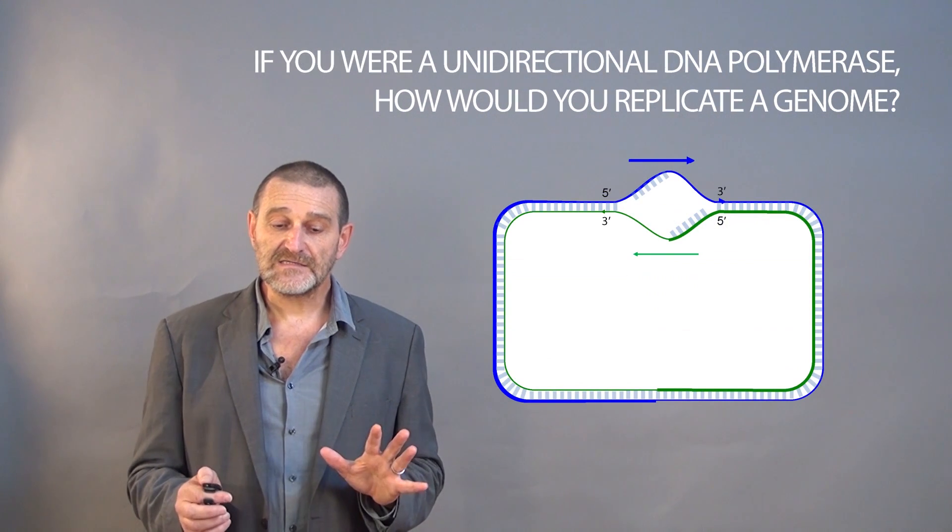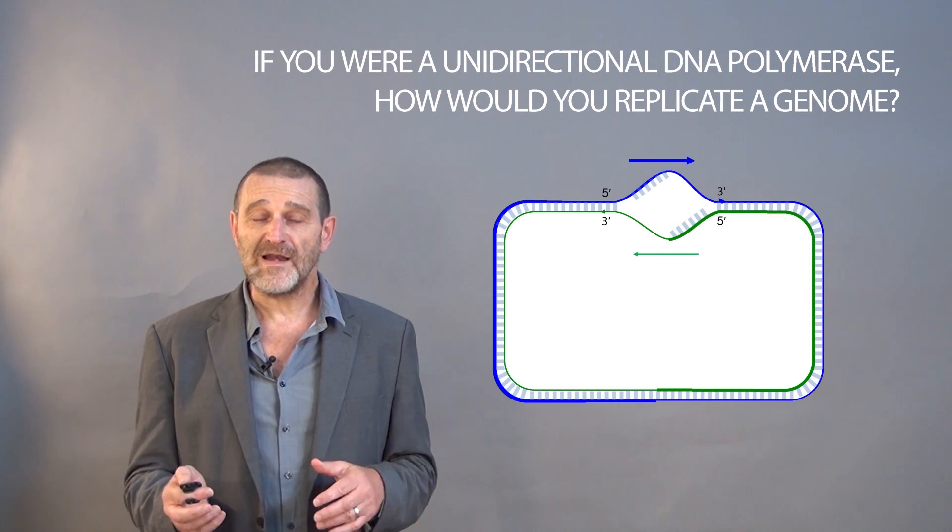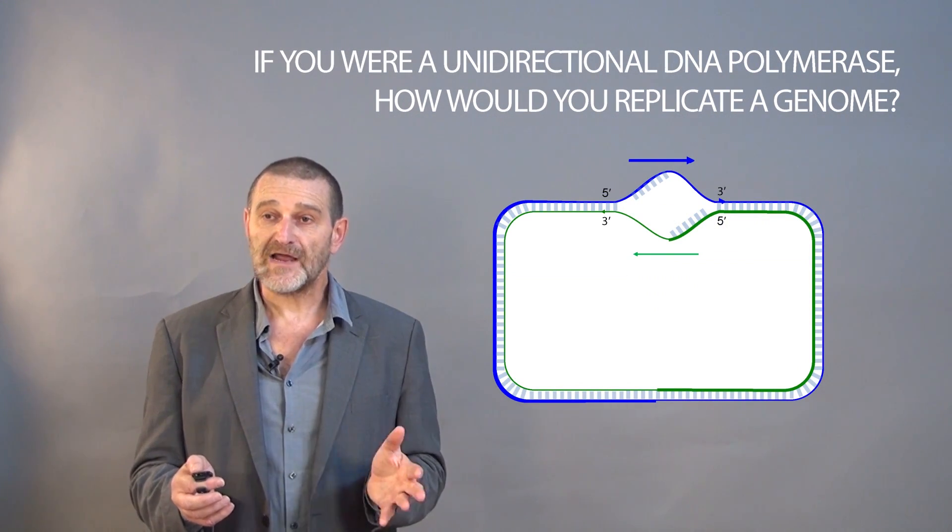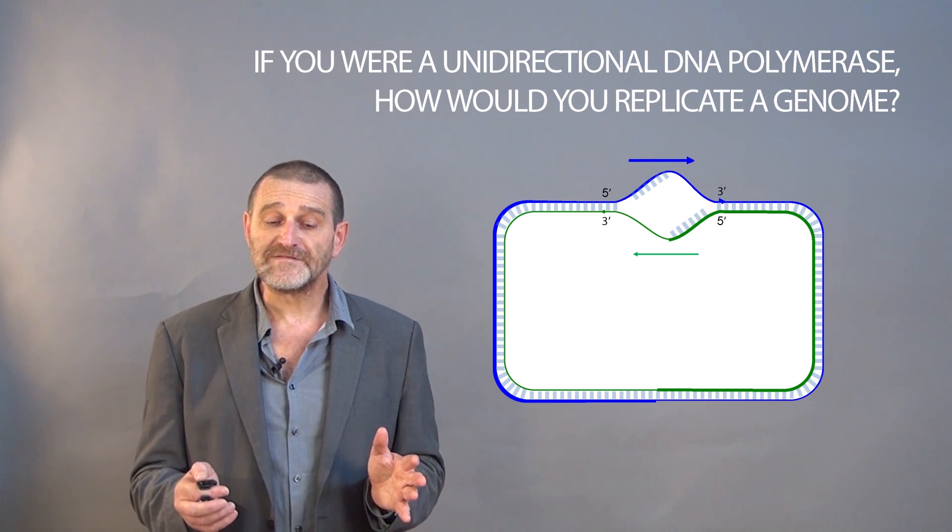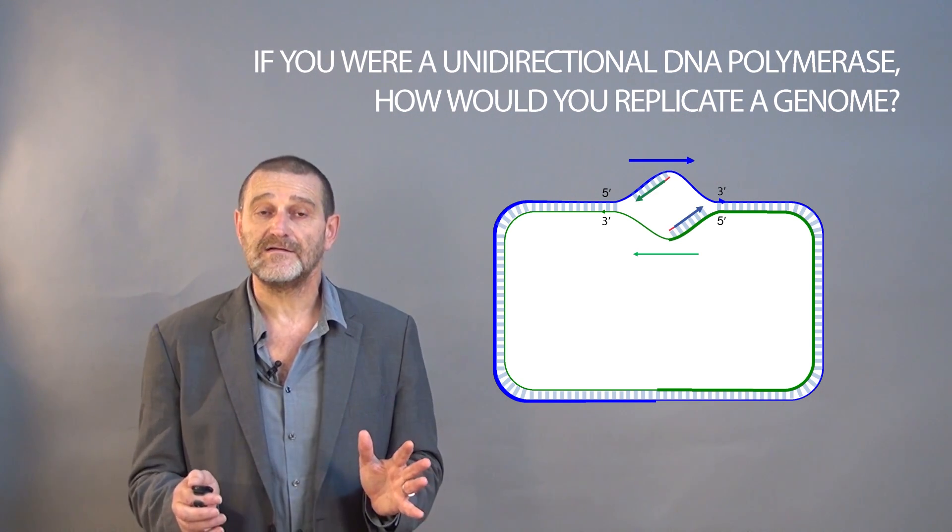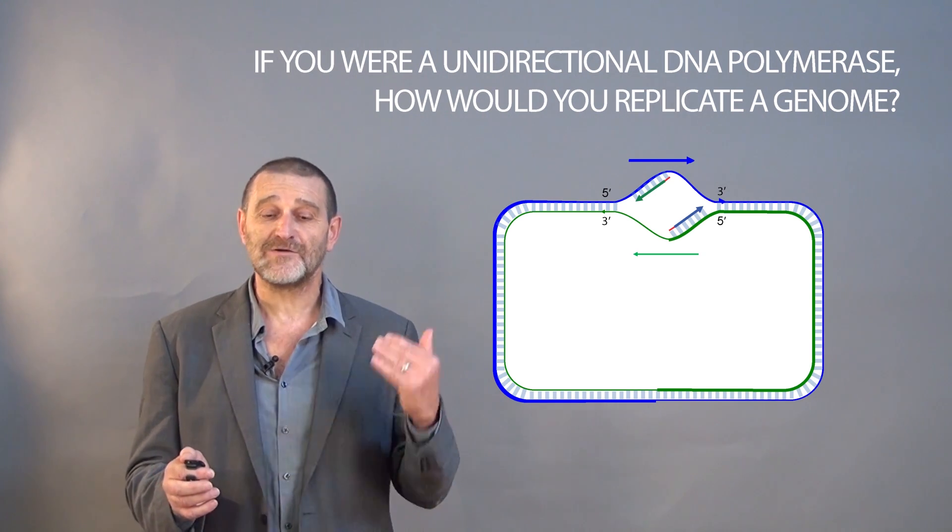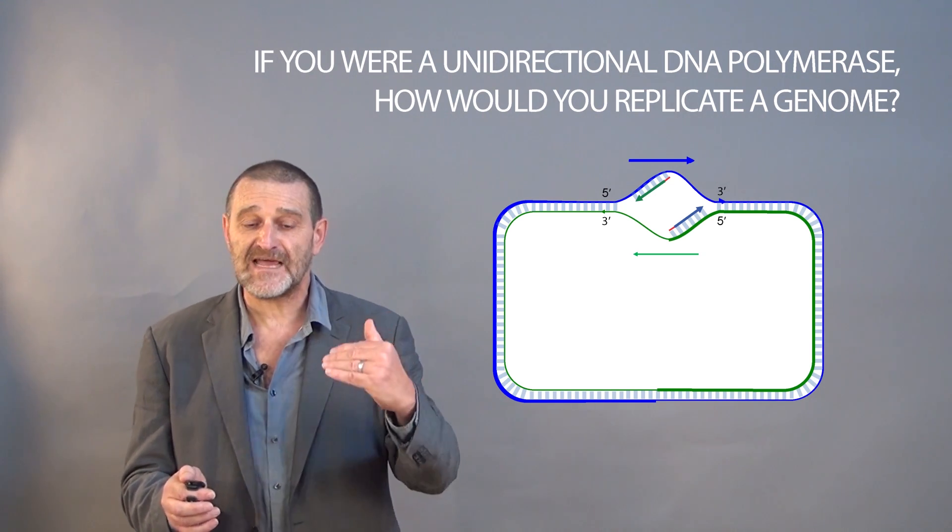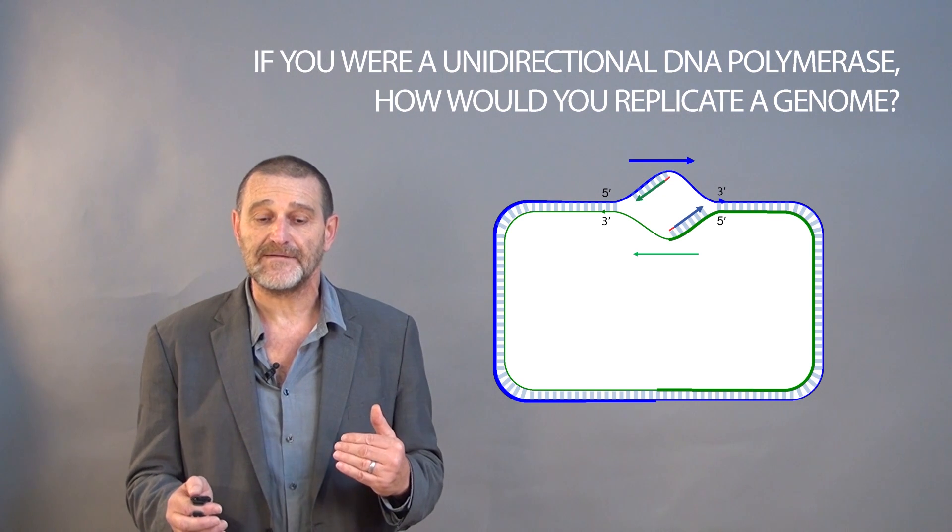When we want to recruit four polymerases to replicate DNA, two of them, this one and this one, will be working just fine. But two others won't be able to move because they cannot move in the same direction as the direction of DNA.